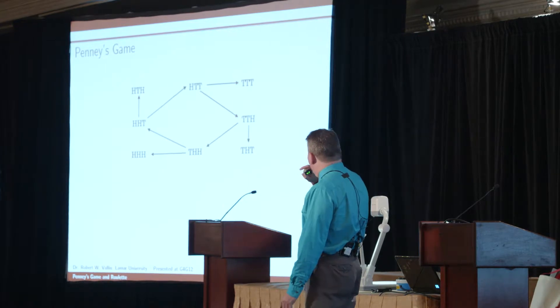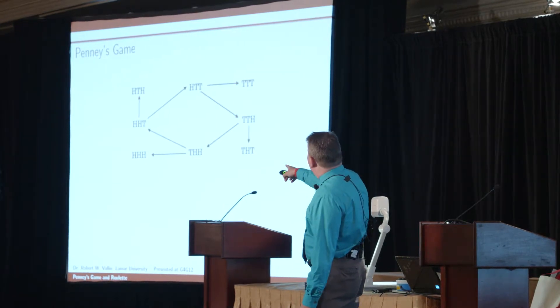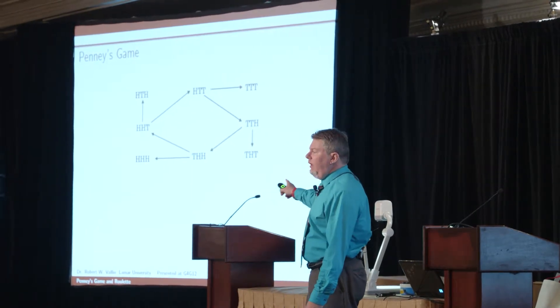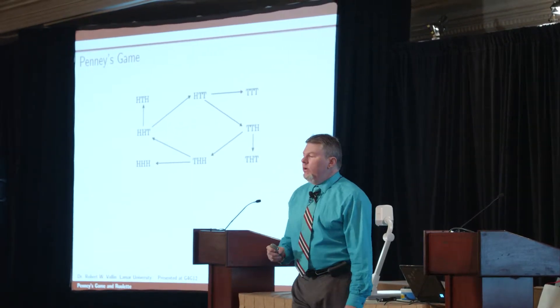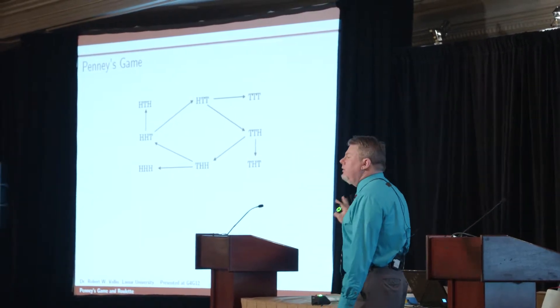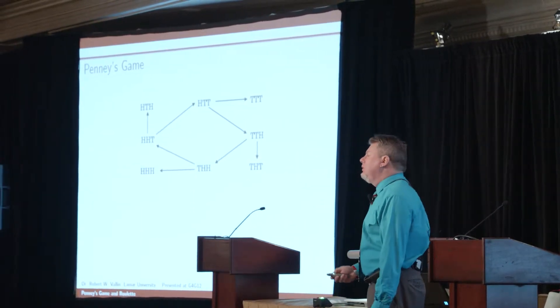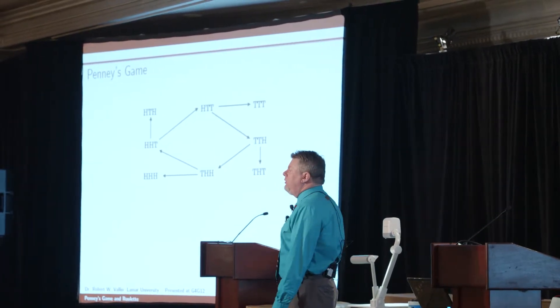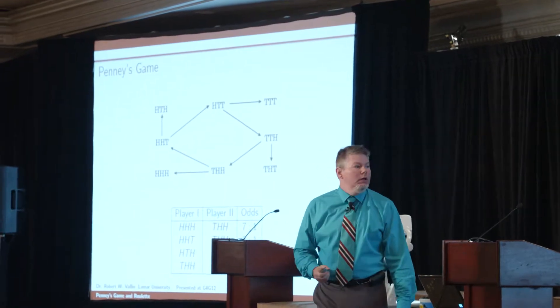What happens is that no matter what player one picks, there's a pick for player two that puts the odds in player two's favor. You can travel the arrow backwards on the chart — if you look at heads, heads, heads in the corner, that leads to tails, heads, heads. If player one picks heads, heads, heads, player two with tails, heads, heads has a seven to one advantage.